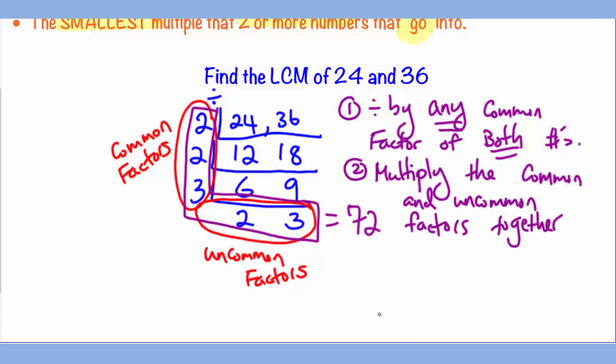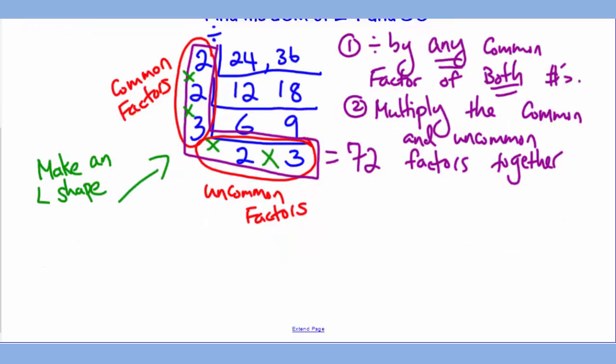Once again, it should interestingly make an L shape. I want to reiterate that it doesn't matter how you begin. So if I redo this question again and I did not start with 2 as my first common factor, I would end up getting the same answer. So I know that 4 goes into 24 and 36, which gives me 6 and 9.